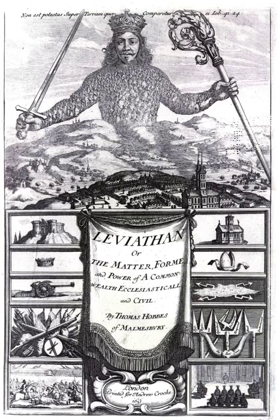According to the Oxford English Dictionary, a state is "an organised political community under one government, a commonwealth, a nation; or such a community forming part of a federal republic, especially the United States of America." Confounding the definition problem is that "state" and "government" are often used as synonyms in common conversation and even some academic discourse. According to this definition schema, states are non-physical persons of international law, while governments are organisations of people. The relationship between a government and its state is one of representation and authorised agency.